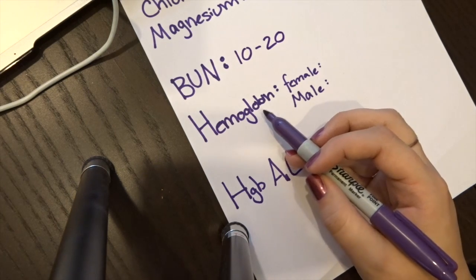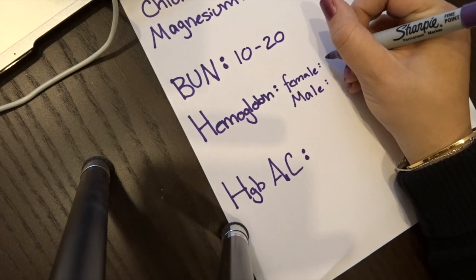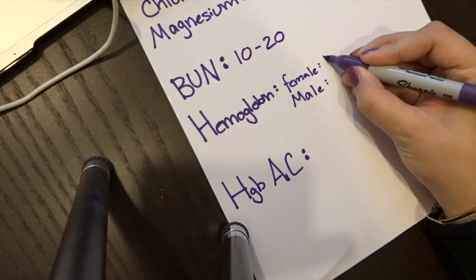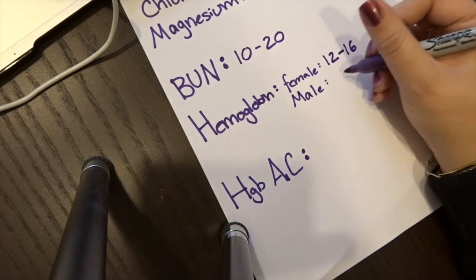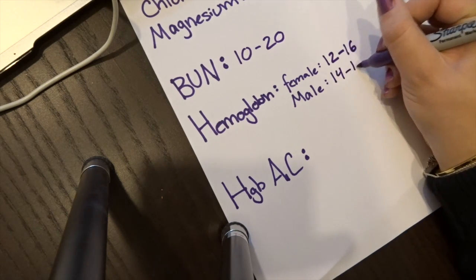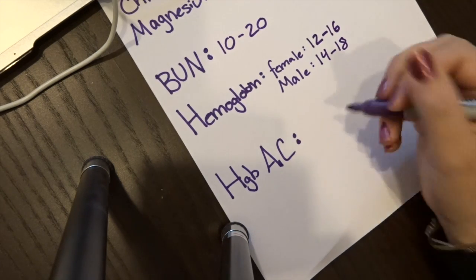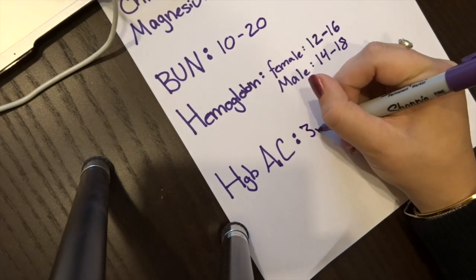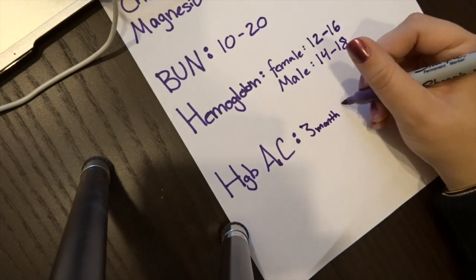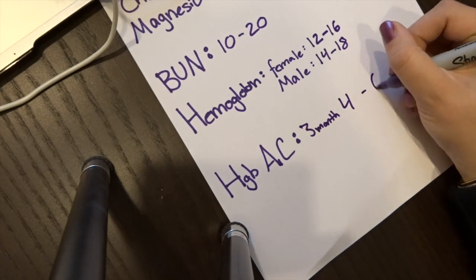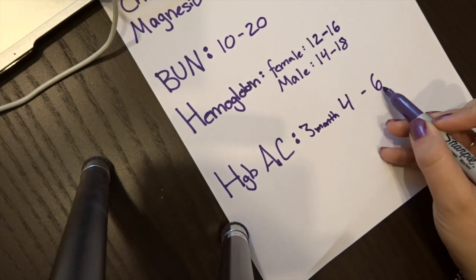Hemoglobin, there's two different values, one for women, one for men. I think of it as girls mature faster. They mature between the ages of 12 to 16. Men mature a little later. For them, it's more 14 to 18. And then hemoglobin A1c is a three-month review of glucose. That's going to be 4 to 6. So I like to think of it as three-month and then 4, 5, 6.